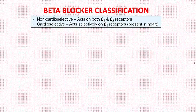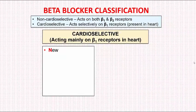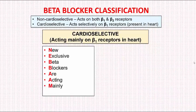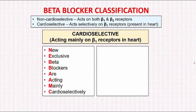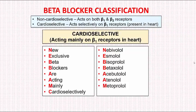So we first have a look at the cardioselective beta blockers. The mnemonic here is: 'New Exclusive Beta Blockers Are Acting Mainly Cardioselectively' — where N stands for nebivolol, E stands for esmolol, B stands for bisoprolol, B stands for betaxolol, A stands for acebutolol, A stands for atenolol, M stands for metoprolol, and C stands for celiprolol.